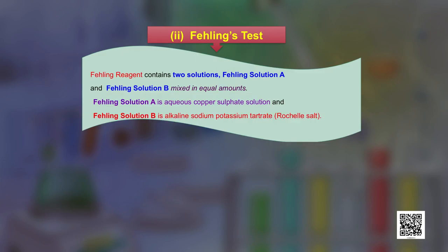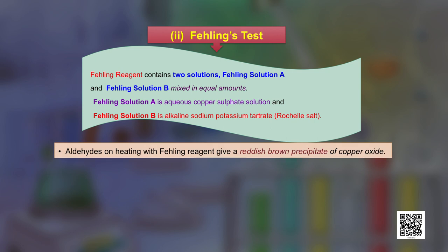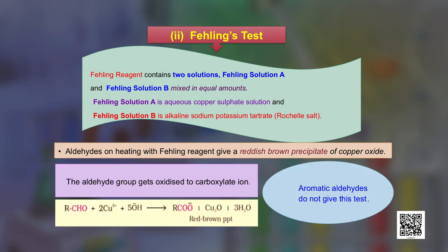Fehling's reagent contains two solutions mixed in equal amounts: Fehling's solution A (an aqueous solution of copper sulfate) and Fehling's solution B (alkaline sodium potassium tartrate, also called Rochelle salt). Aldehydes on heating with Fehling's reagent give a reddish-brown precipitate of copper(I) oxide, with the aldehyde group oxidized to a carboxylate ion. Aromatic aldehydes do not give this test.